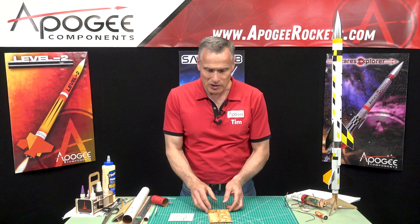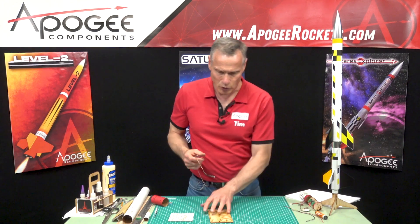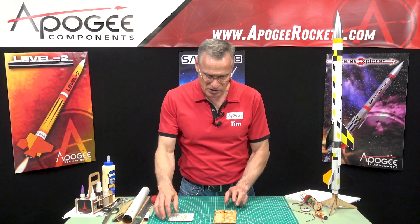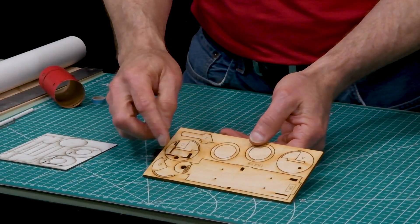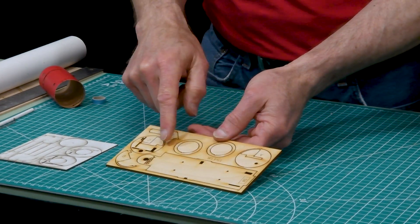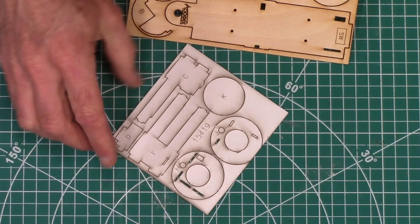So our first step is we need to remove some parts from the boards. We want parts B, C, D, and E. So B, C, and E are here on the plywood. We're also going to want the eBay sled. This is called the sled, and then we also want part D.